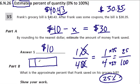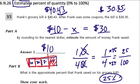Think of it visually: his original bill was $40 — here's $10, $20, $30, $40 — four equal chunks. The coupon cut off one chunk of $10, so he paid $30. One fourth of the total was saved, giving us 25 percent. There are many other fun problems we can make about this, but this one is just a start — hope it helped!